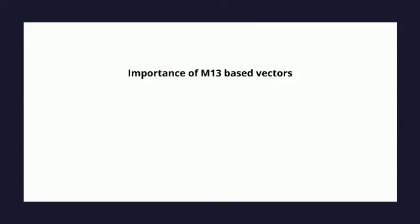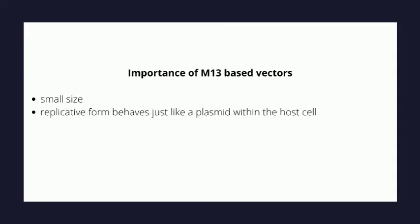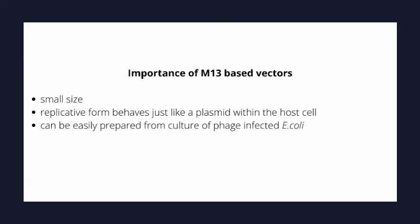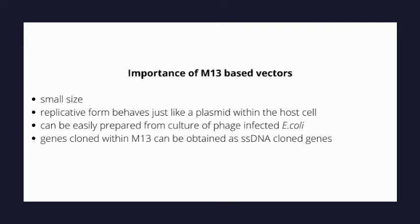The importance of M13-based vectors in cloning lies in their small size, their replicative form which behaves just like a plasmid within the host cell, and that they can be easily prepared from culture of phage-infected E. coli. Most importantly, genes cloned within M13 can be obtained as single-stranded DNA. M13 vectors are very useful in DNA sequencing and in vitro mutagenesis.